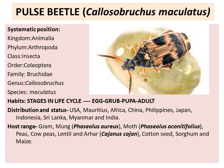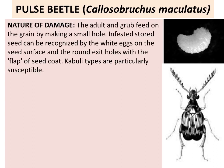Damage is mainly caused by grubs and the adult. The adult and grub feed on the grain by making small holes. Infested stored seeds can be recognized by the white eggs on the seed surface and the round exit holes with a flap of seed coat. Kabuli type are particularly susceptible.